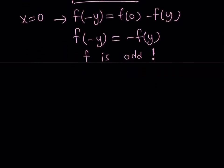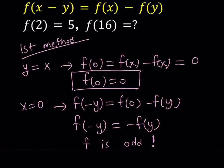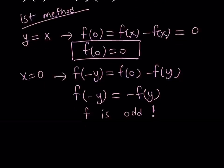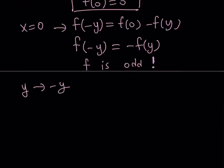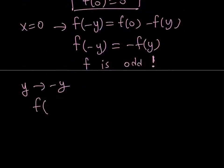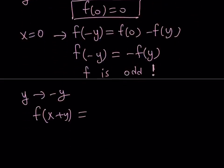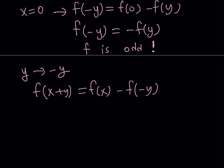Now, I know that f is odd and f of 0 is equal to 0, but I do need more information. Let's go ahead and replace y with negative y. If you replace y with negative y, you're going to get f of x minus negative y, which is f of x plus y. And that is going to give me f of x minus f of negative y. But remember, f is an odd function. So f of negative y is the opposite of f of y or negative f of y. This is going to give you f of x plus y equals f of x plus f of y.